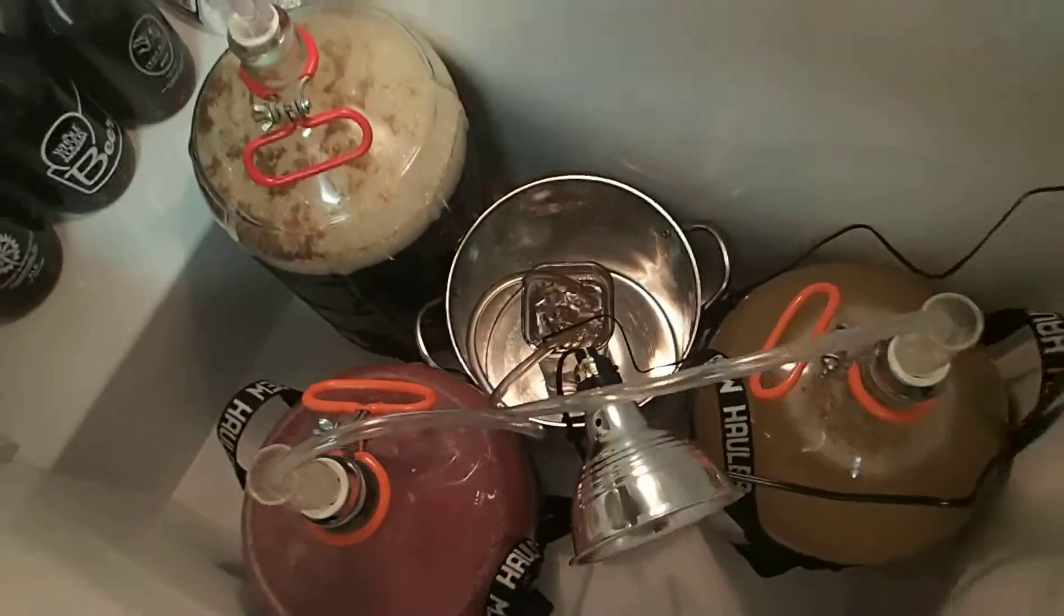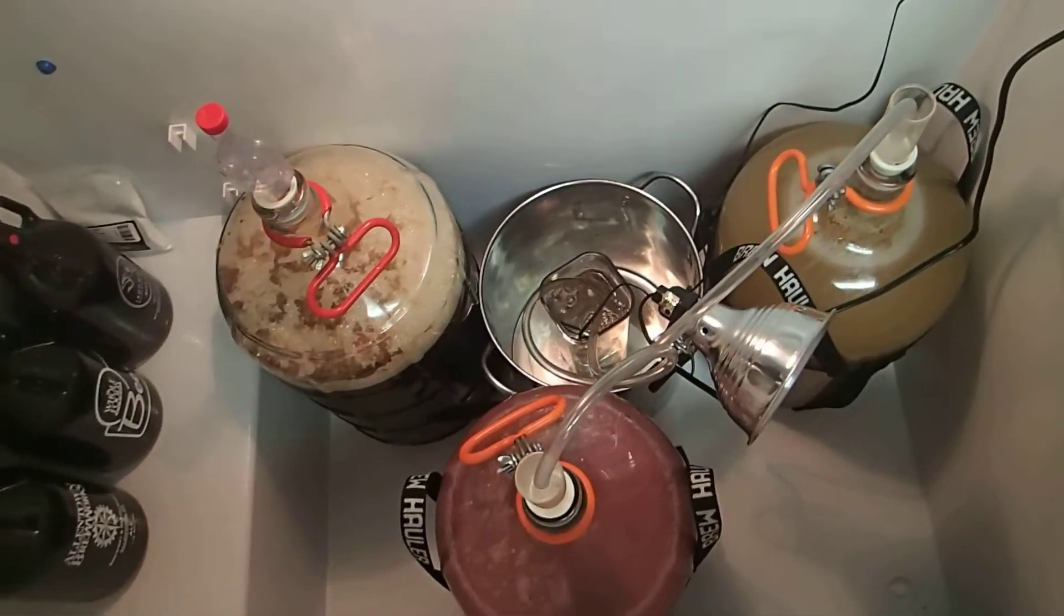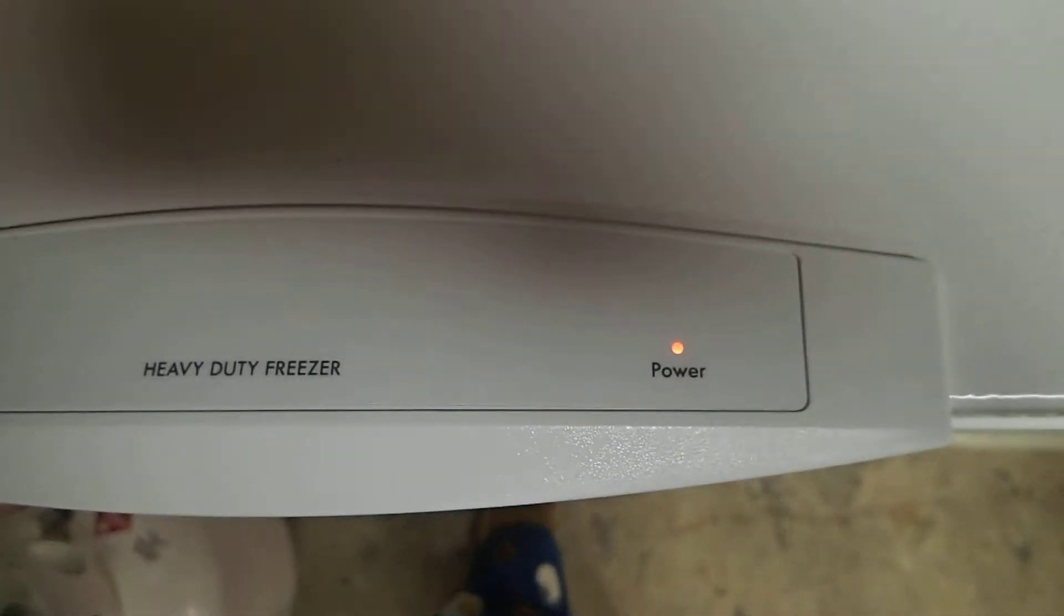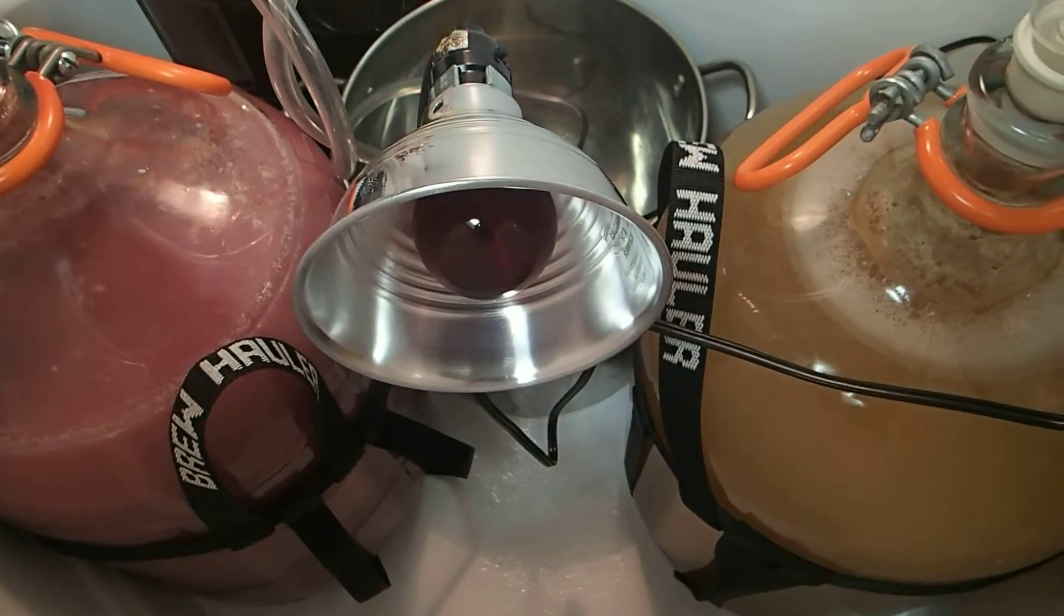As of right now, because we want our target temperature to go down to about 16.6 degrees Celsius, you can see that power is on to the chest freezer. If that were to get too cold, however, the reptile lamp will kick on. That's the other outlet that the temperature controller is using.